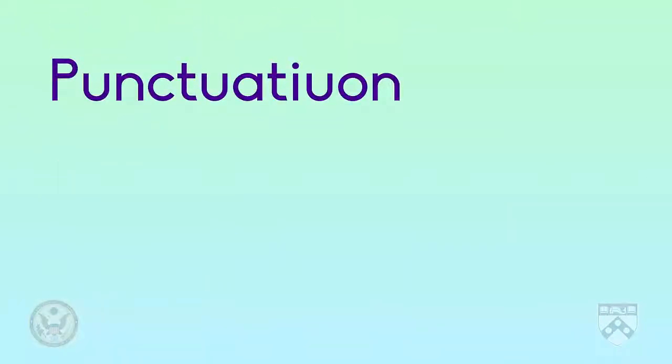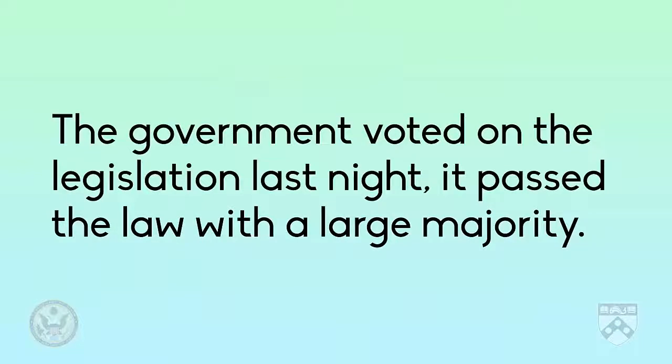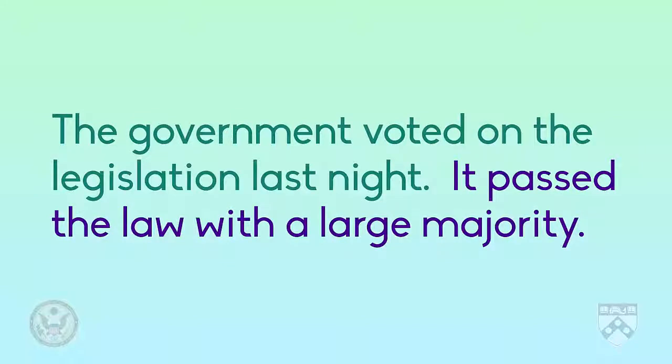Punctuation means commas, periods, apostrophes, colons, and other marks. A common error is to have one long sentence separated by a comma when it should be split into two sentences. For example, the government voted on the legislation last night, it passed the law with a large majority. This should be two sentences with a period after night and a new sentence starting with it.